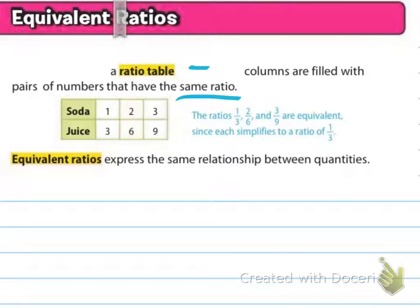The first thing that we're going to talk about for this section is equivalent ratios, which we went over in class. A ratio table has columns that are filled with pairs of numbers that have the same ratio. Here's an example of soda to juice: the ratio is that for every one soda we have three juices. So for every two sodas we have six juices, or every three sodas we have nine juices. These are all equivalent ratios because they're still expressing the same relationship between the quantities. If you simplified three-ninths or two-sixths down, it would still be a one-to-three ratio for sodas to juice.